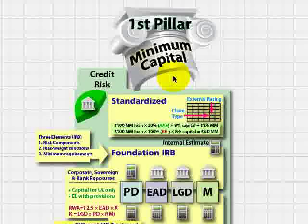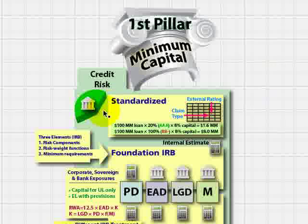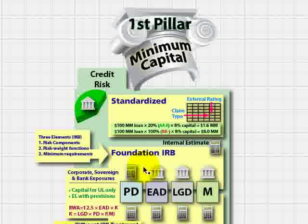First, to put it in perspective, recall that Basel II has three pillars, and it's the first pillar that contains the quantitative rules that determine the minimum capital requirements. That first pillar has rules for each of credit risk, market, and operational risk. In the last couple of days, I've reviewed the rules for credit risk under the first pillar, and we saw that there is a basic or standardized approach that evolves into a set of advanced approaches called internal ratings-based.